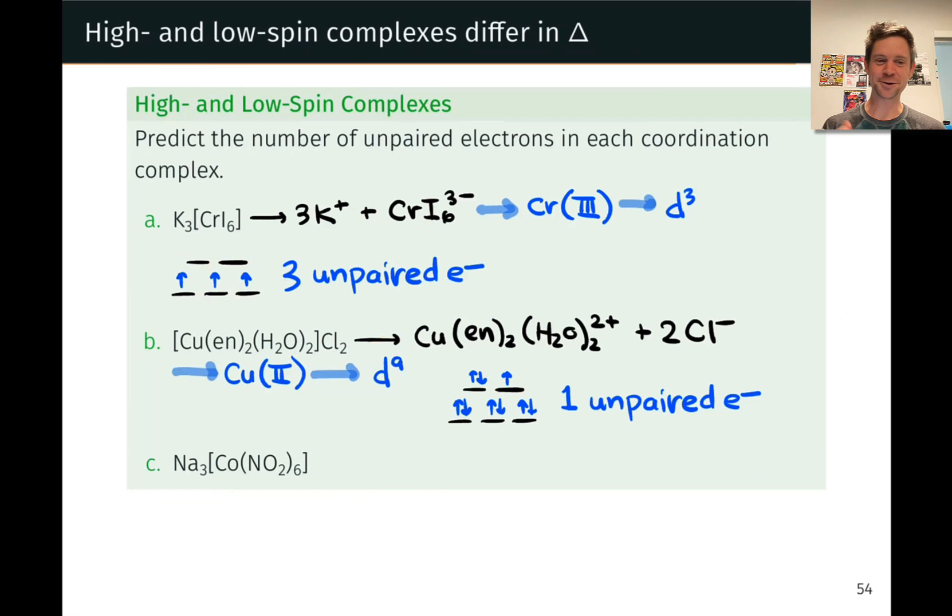Now, where things get really interesting is in Kc. Kc has this cobalt nitrite complex, Co(NO2)6 3-, and if we do the oxidation state and charge math here, we find that this is cobalt-3, a d6 cation. So we've got six d electrons to fill in, and there are now two different ways to do this depending on whether we're dealing with a strong field or weak field ligand.